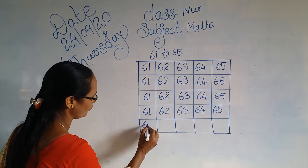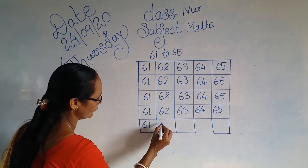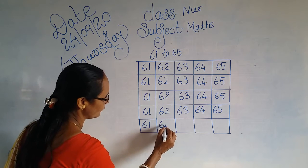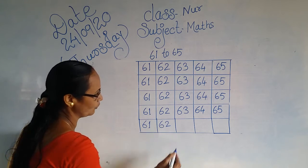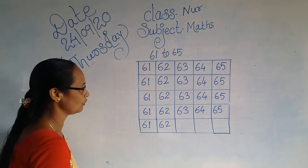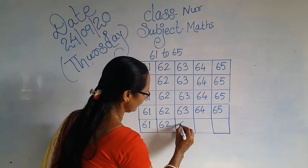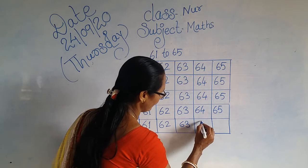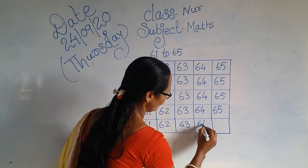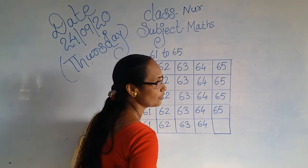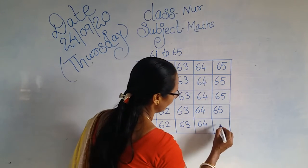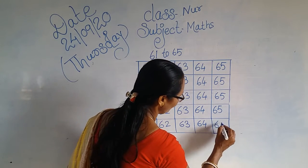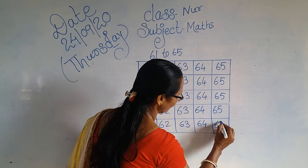6, 1 — 61. 6, 2 — 62. 6, 3 — 63. 6, 4 — 64. 6, 5 — 65.